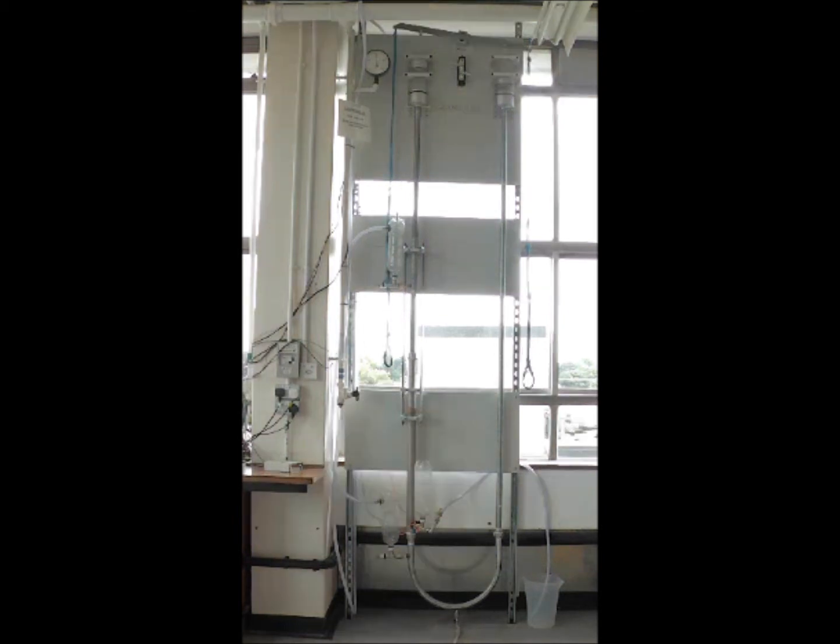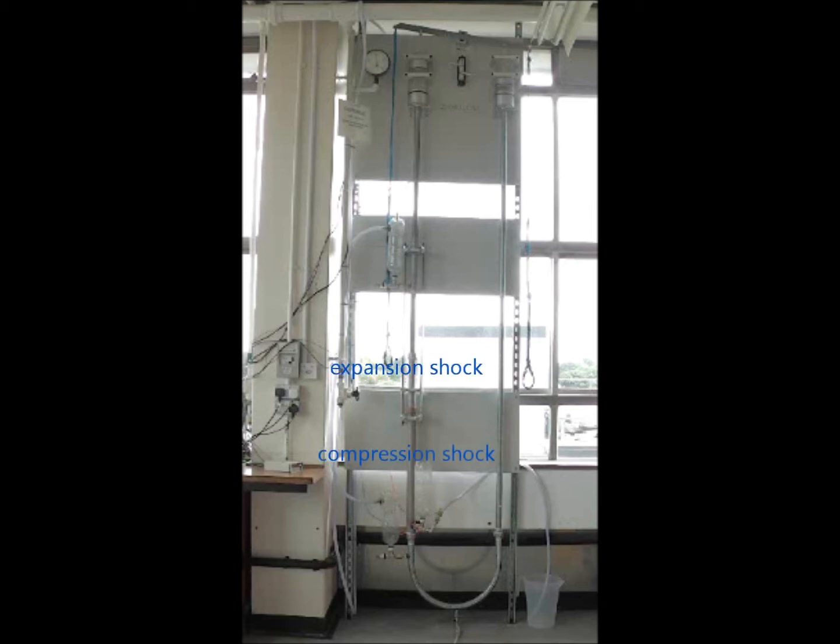If I pull down on the right-hand side piston, the object blocks the flow and we get a water hammer effect. This sends an expansion wave upwards and a compression wave downwards. Water is then drawn from the top reservoir and discharged through the outlet.